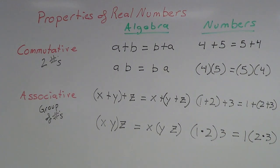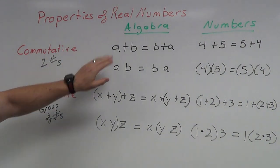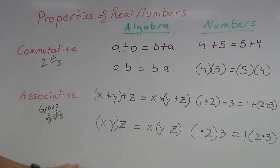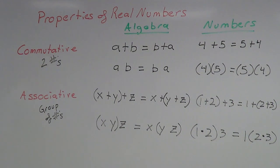To summarize, those are two properties of real numbers — you could almost call them four properties. We have the commutative property of addition and the commutative property of multiplication, which state that it doesn't matter what order you add or multiply two numbers. Then there's the associative property of addition and the associative property of multiplication, which tell us it doesn't matter what order you add or multiply a group of numbers — whether it's three, four, or five numbers.